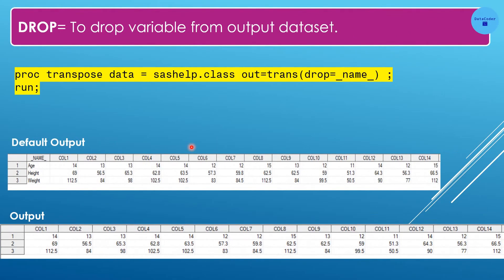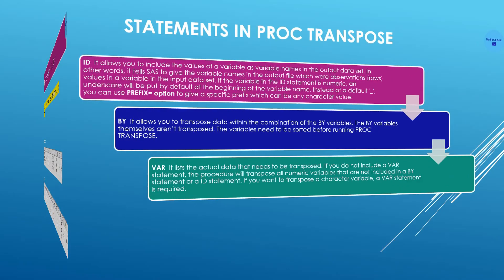The DROP= option is used to drop variables from the output data set. For example: PROC TRANSPOSE DATA=sashelp.class OUT=trans DROP=_NAME_; RUN. Here we drop the _NAME_ variable, and in the resulting output, _NAME_ has been removed.